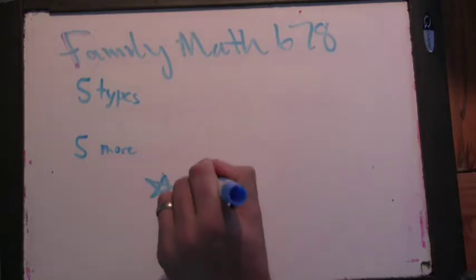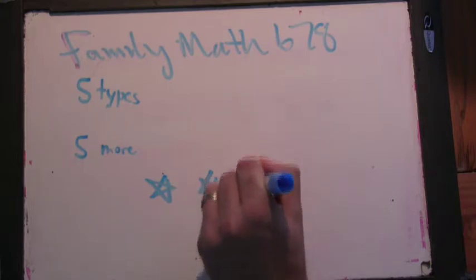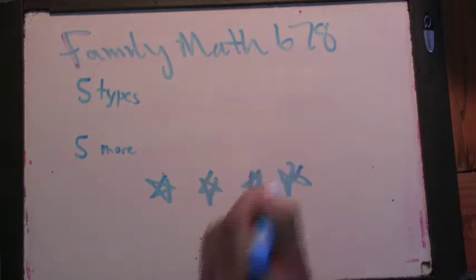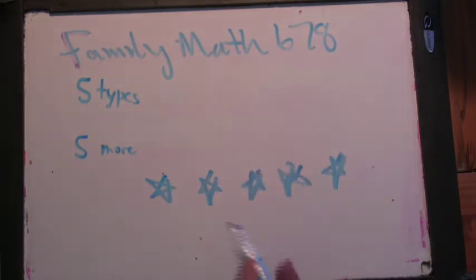So this is a problem about stars and bars. The way you can approach a problem like this is we can imagine we have five stars. It's going to be our types.